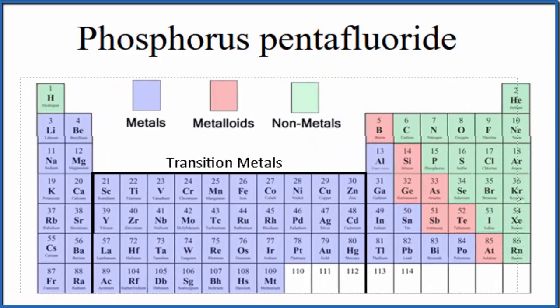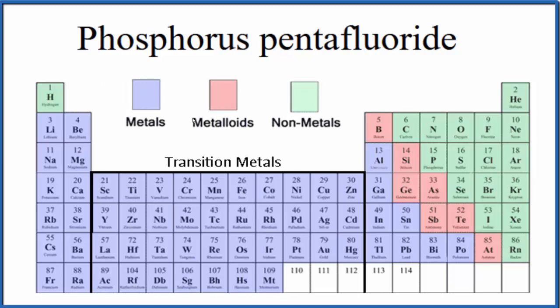Looking at the periodic table divided into metals, metalloids, and nonmetals, we can find phosphorus right here, and then fluoride, that's fluorine, right here.